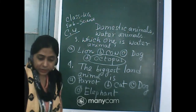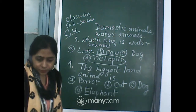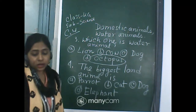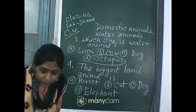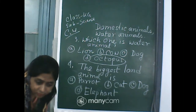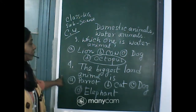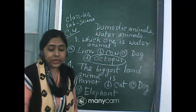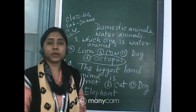Ashmita gave the first answer. The correct answer is D: Elephant. Elephant is the biggest land animal. Very good — all of you who answered elephant are correct!